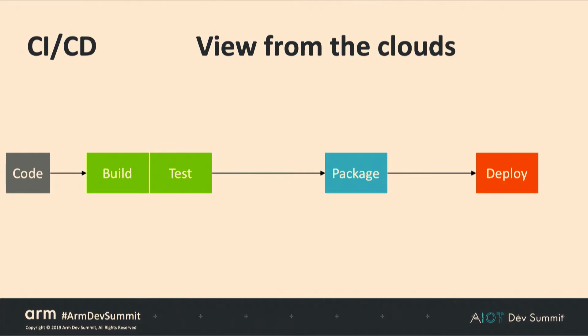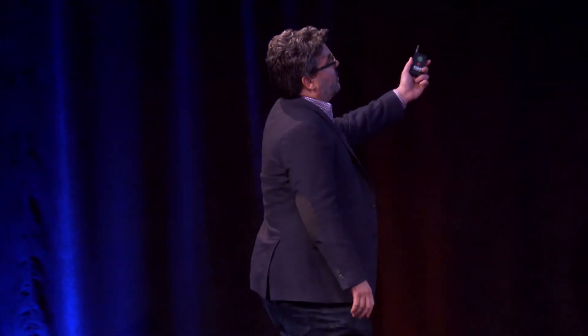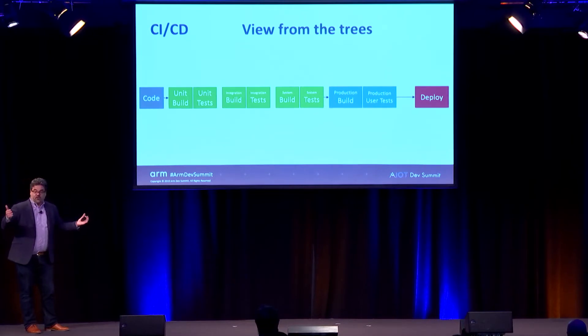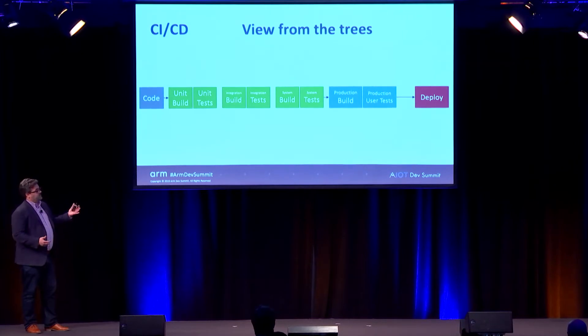At a high level, you have your code, you build it, test it, package it, and deploy it. Moving one level down, you do unit builds and unit tests, then integration builds followed by integration tests, then you build your whole system — system builds and system tests. If all those pass, you move to production build, then production user tests, and finally deployment.